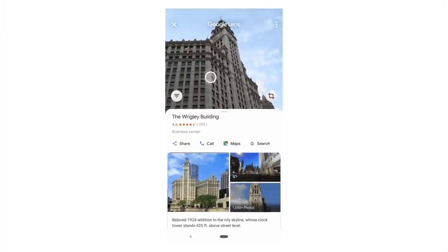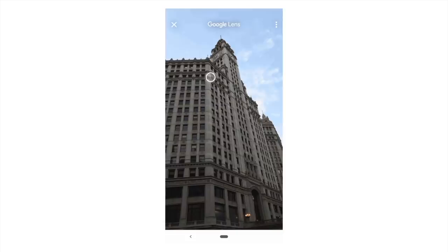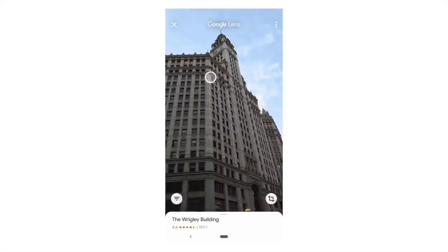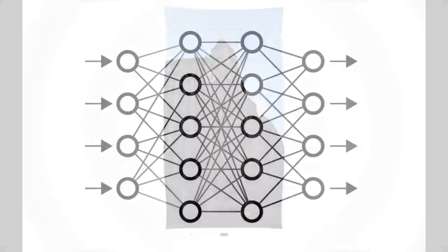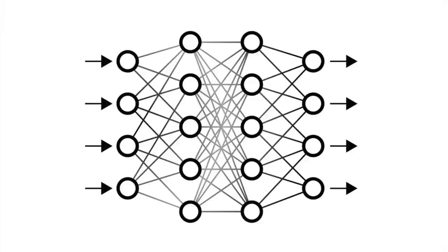Fascinated by the tool, John goes forward and creates his own neural network for detecting landmarks. He goes through a rigorous process of collecting data, labeling data, cleaning data, and finally creates a machine learning model that can tell him which monument it is. Everything looks good — he is able to reach a very high accuracy score. Now the only challenge he has is where to deploy the model.